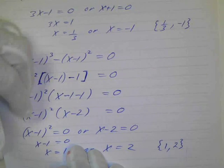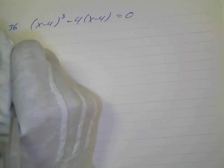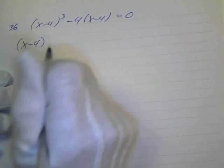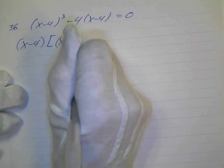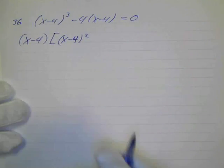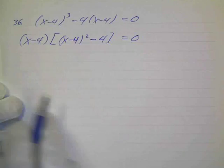Okay. And then 36. We have x minus 4 to the third minus 4 times x minus 4 equals 0. And again, we have a common factor of x minus 4, so I'm going to factor that out. Like I said, you can expand this, multiply this all out, but this is a lot easier. Just factor out x minus 4. And what's left in the first term is x minus 4 squared minus 4, because we factored out the x minus 4.